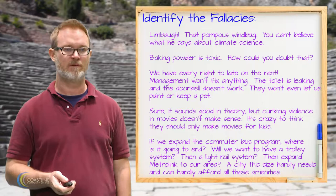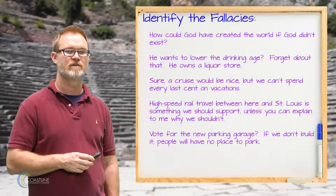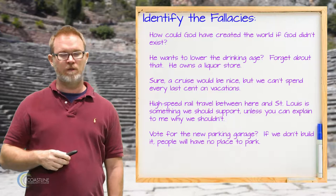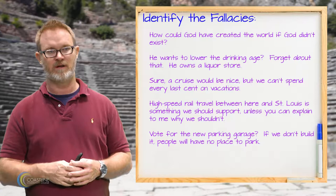The next one says: how could God have created the world if God didn't exist? This one appears to be a begging the question mistake. The point seems to be that God didn't create the world because there's no God — the premise assumes the conclusion.